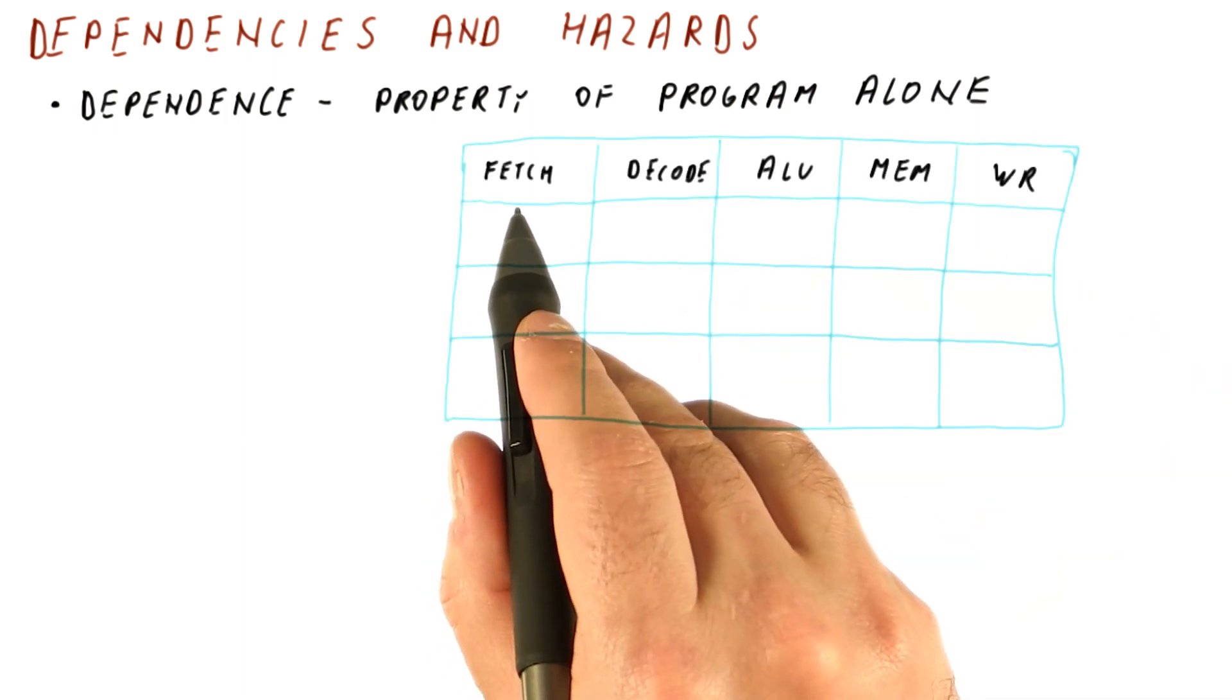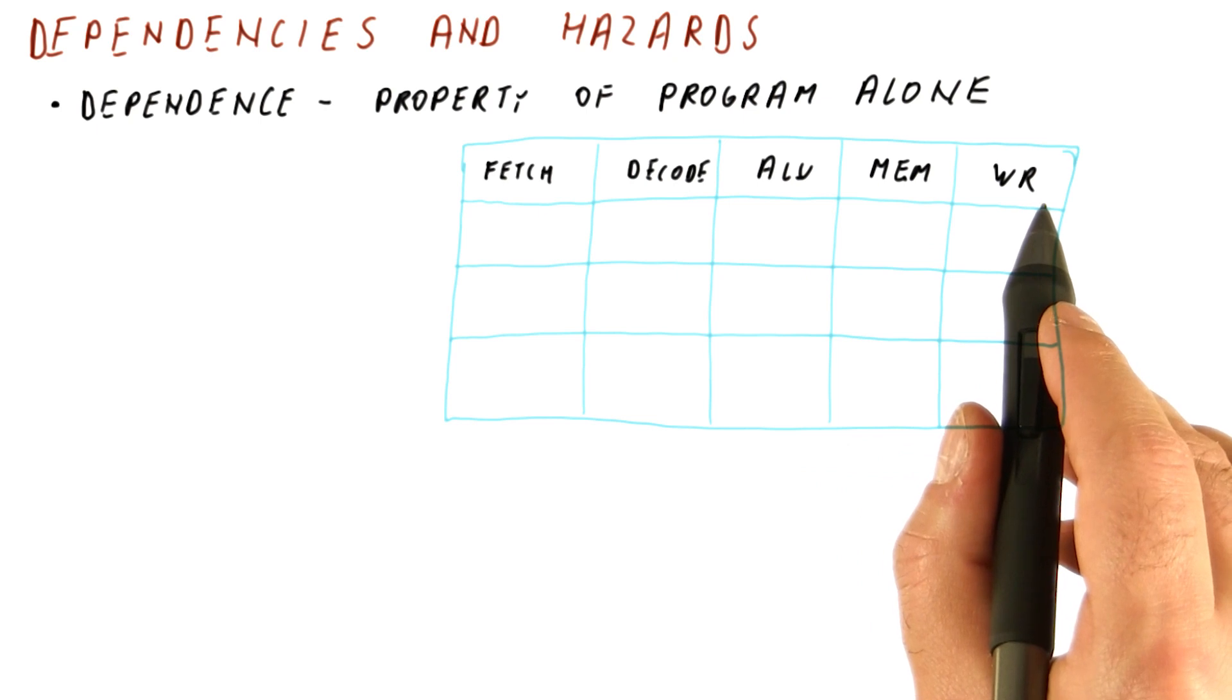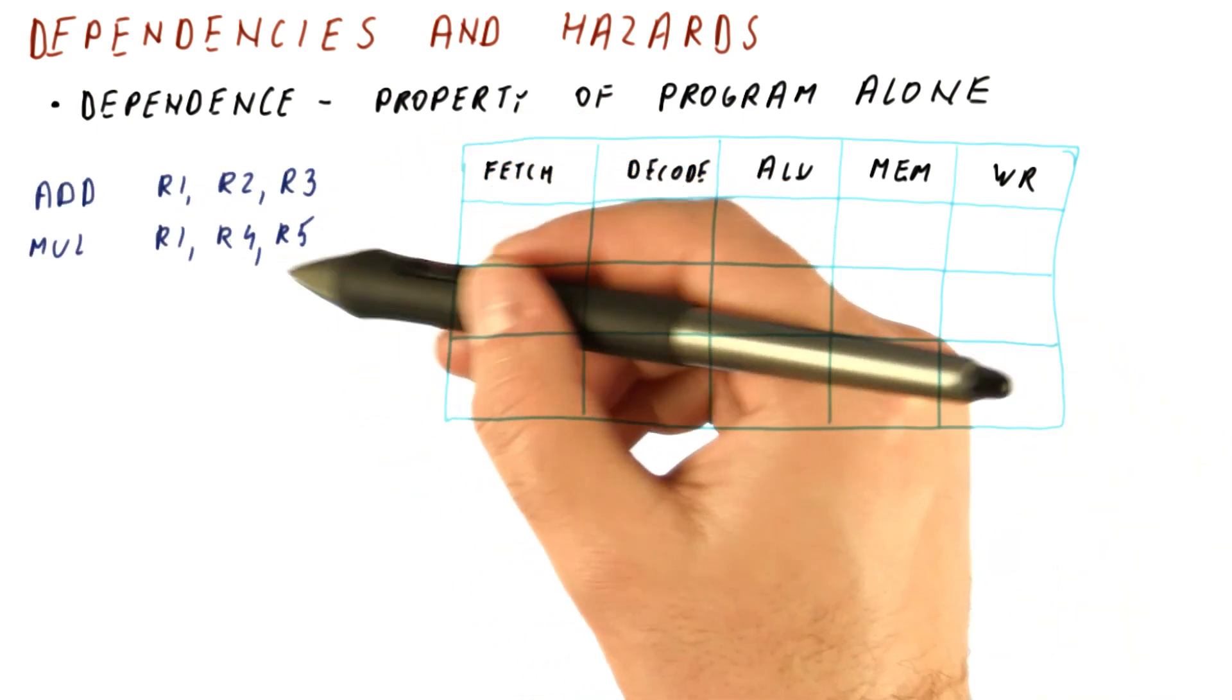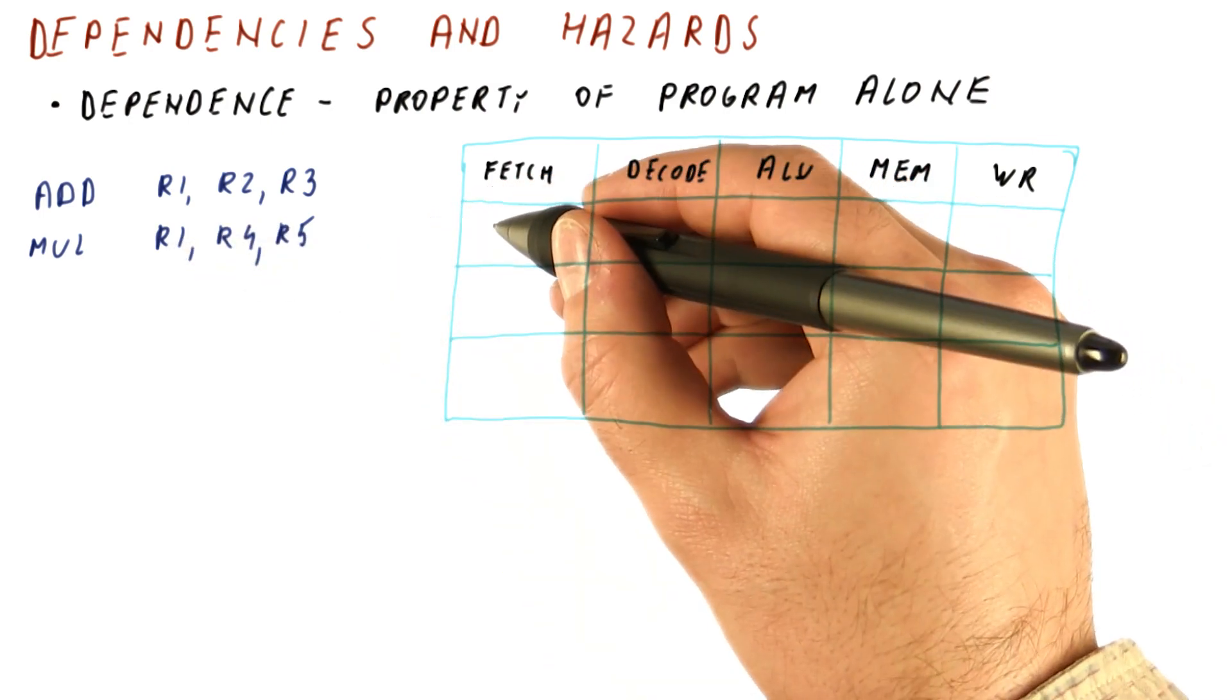Let's say we have the classical five stage pipeline with fetch, decode, ALU, memory, and write stages. And let's consider two instructions like this that have an output dependence. In this particular pipeline, I will show you that this output dependence is never a problem.